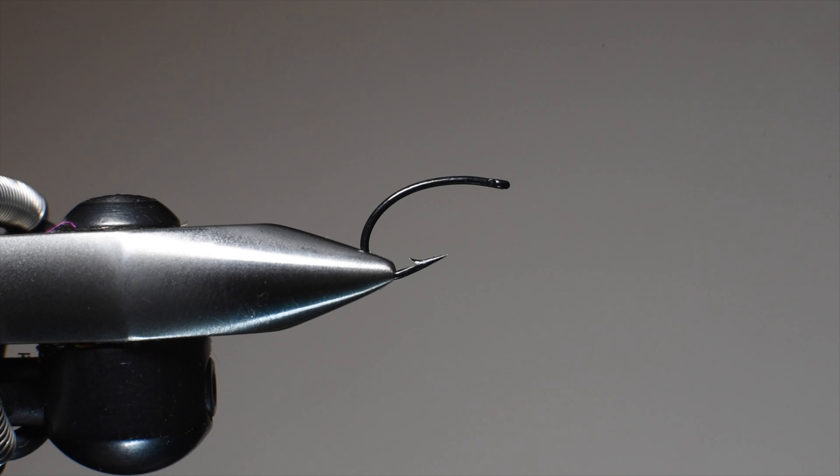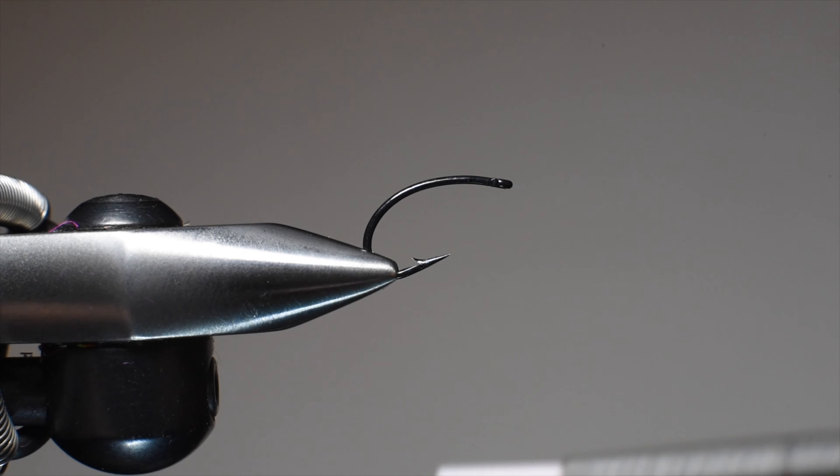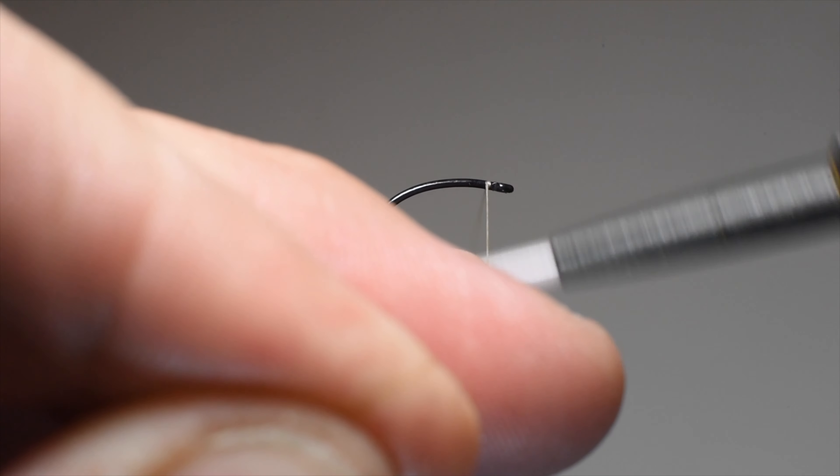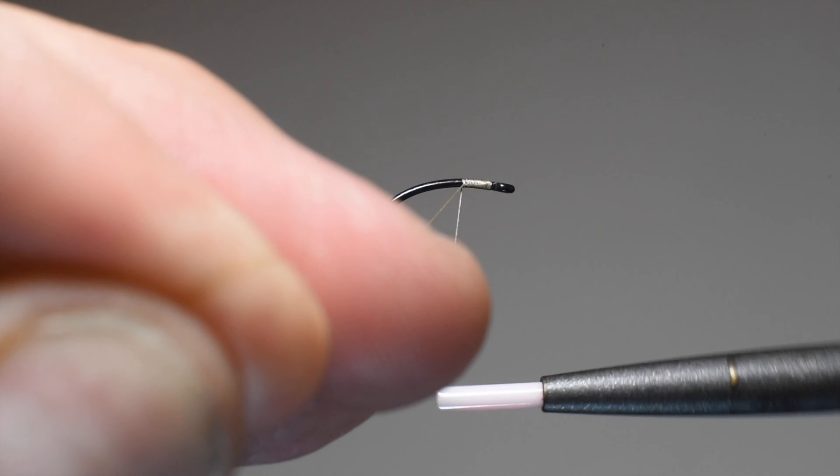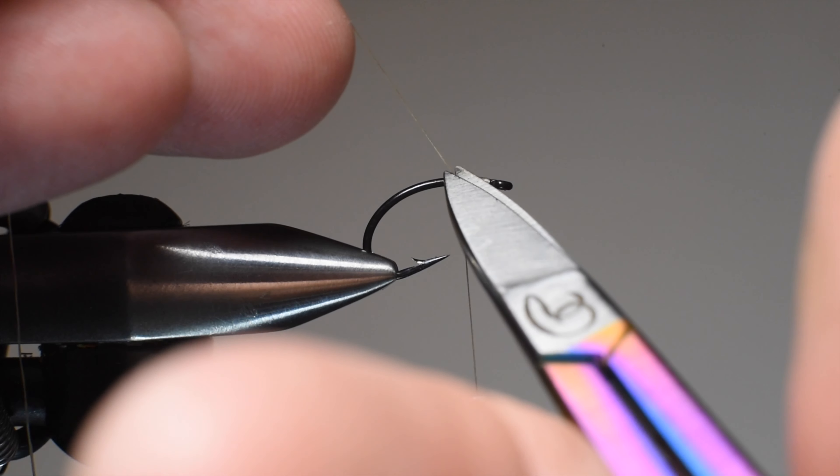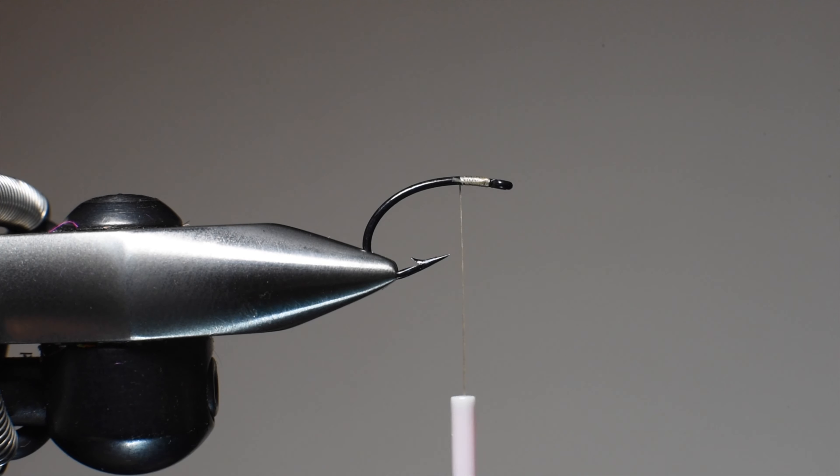I'm going with a greenish color sow bug. It probably resembles more of a scud color, but I've had good luck with some olives as well as my traditional pinkish gray.